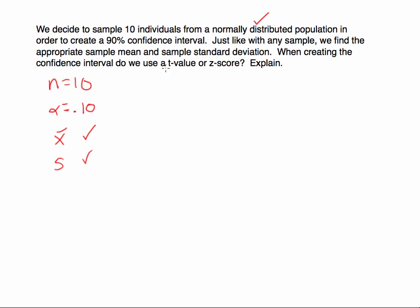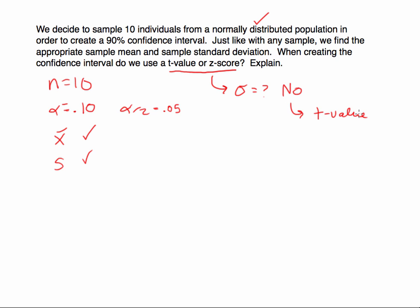When creating this confidence interval, do we use a t-value or z-score? Our sample size is 10, alpha is 0.10, and splitting that in half gives 0.05 in each tail. We know both the sample mean and sample standard deviation. Always ask: do you know the population standard deviation? In this case, we know nothing about the population standard deviation, so we will use the t-distribution. We're looking for a t-value with 0.05 in each tail, and degrees of freedom is 10 minus 1, which is 9.